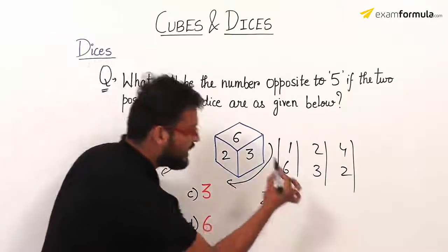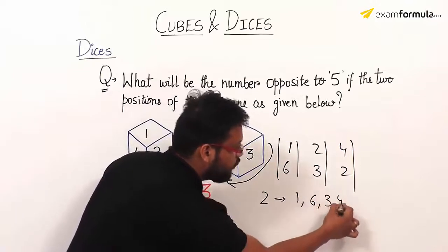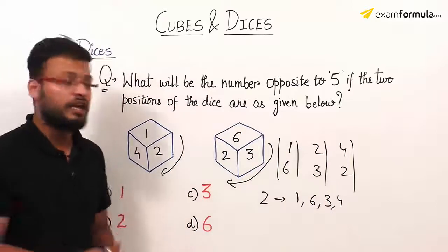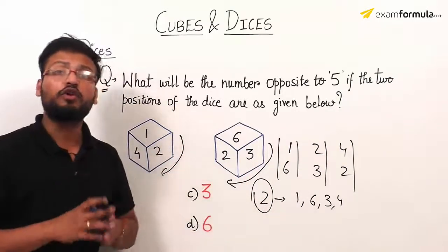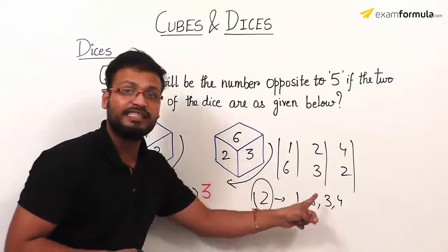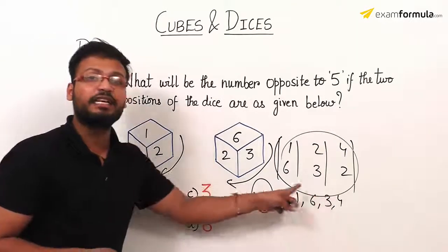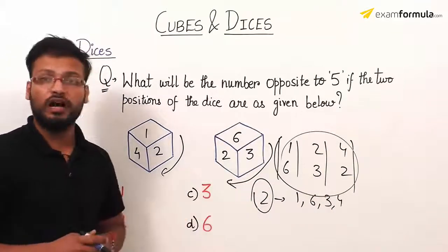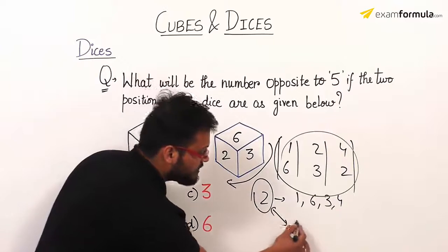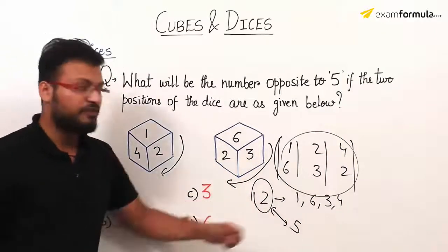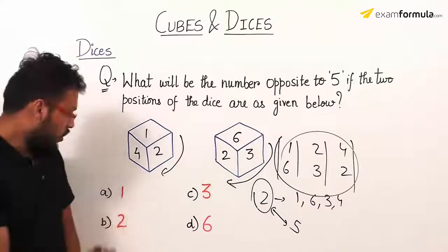The conclusion is: the repeated number is 2. The left-out numbers — 1, 6, 3, and 4 — will all be adjacent to number 2. The only number not appearing at all in these two rows is number 5. So number 5 is opposite to number 2. The question asked for the number opposite to 5, which is number 2. Your final and correct option is option B.